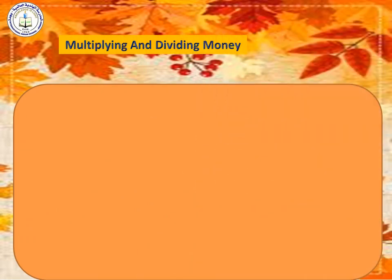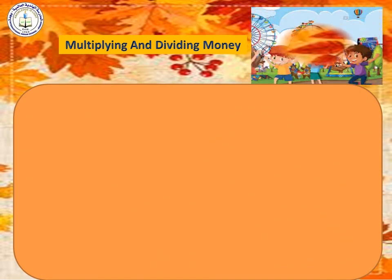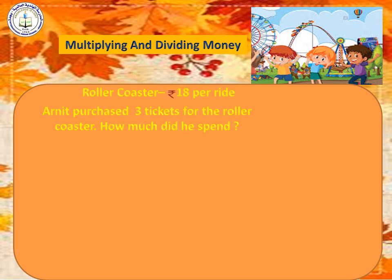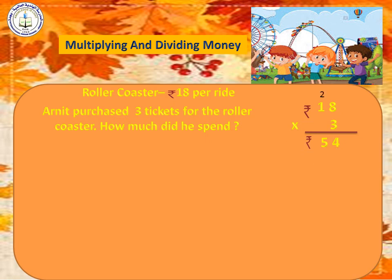Multiplying and dividing money. Children, are you ready to go to an amusement park? Arnit and 2 of his friends went to an amusement park and wanted to ride the roller coaster — 18 rupees per ride. Arnit purchased 3 tickets. How much did he spend? 18 rupees taken 3 times means we multiply: 3 eights are 24, write 4 carry 2; 3 ones are 3, plus 2 is 5. So he spent 54 rupees for 3 tickets.